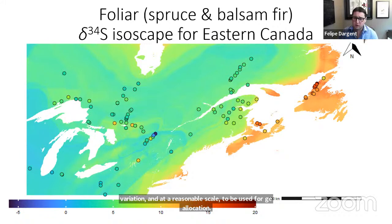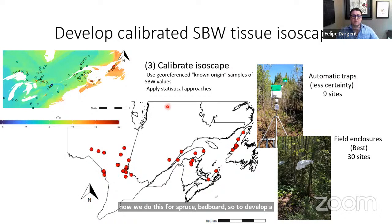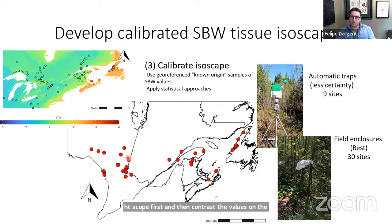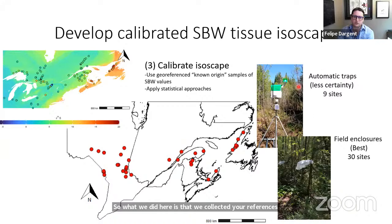This isoscape is really valuable because we can use it, after calibration, to assess the movement of other species — mammals, birds, not just insects. To develop a calibrated spruce budworm tissue isoscape, we need to use the foliar isoscape and then contrast those values to known-origin or at least local sample moths. We collected georeferenced moths known to be local, using automatic traps set by Jannoel and collaborators in the provinces.